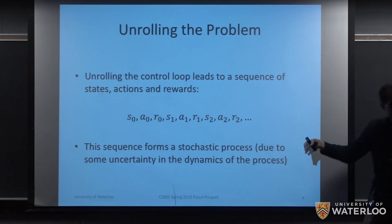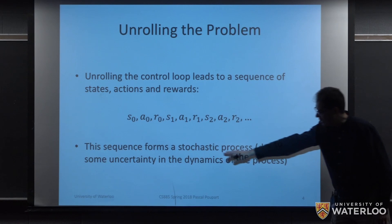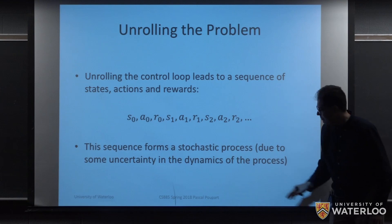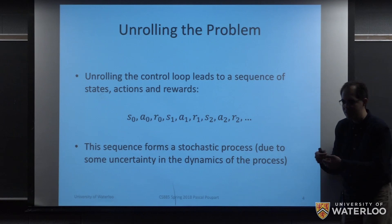This feedback loop leads to this sequence of state, action, reward, state, action, reward, state, action, reward. This sequence, in general, is going to form a stochastic process, in part because there's going to be some uncertainty in the dynamics that underlie this process. So for most problems, this will not be a deterministic sequence.